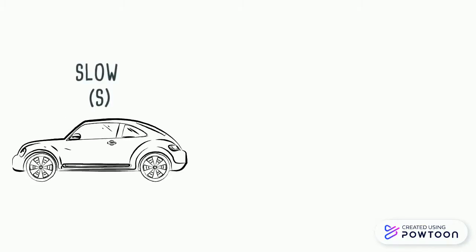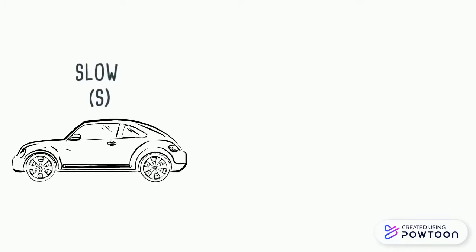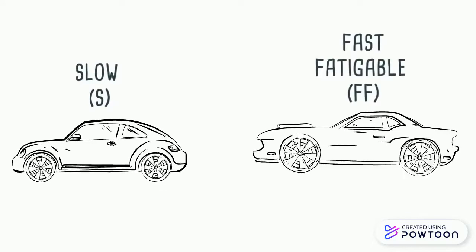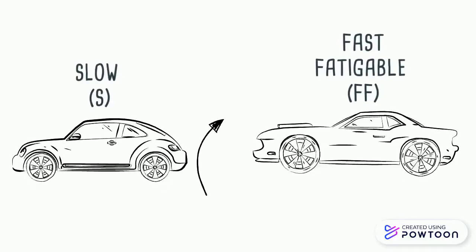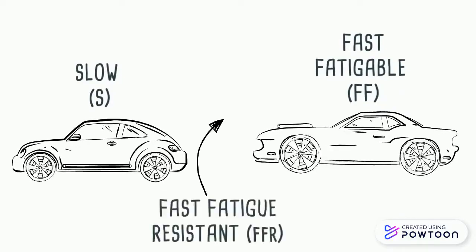There are three types of motor units. Slow, which is like our family car. Fast fatigable, which is like the fancy sports car. And if there's a model somewhere in between, then that would be our fast fatigue-resistant motor unit.